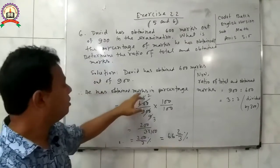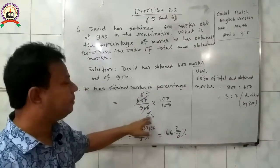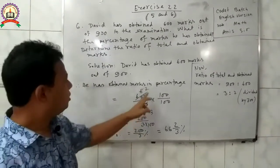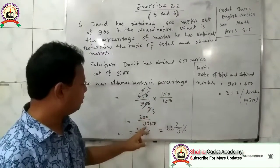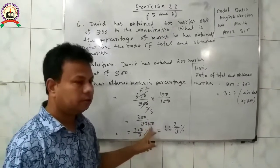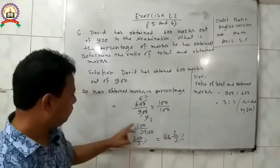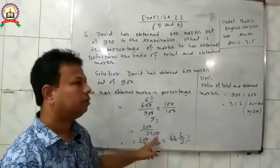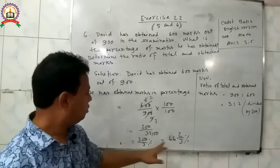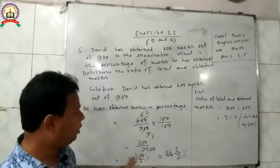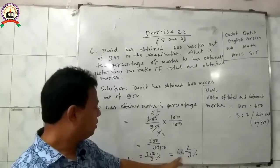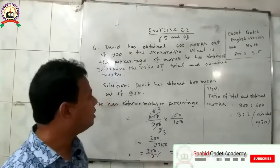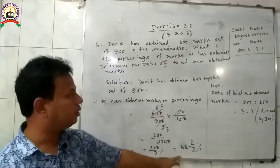600 divided by 100 equals 6. Then we simplify: 9 divided by 3 equals 3, and 6 divided by 3 equals 2. So we get 2 into 100 over 3, which gives 200 divided by 3 percent. Converting this improper fraction to a mixed fraction, we get 66 and 2/3 percent. This is the answer for the first part.